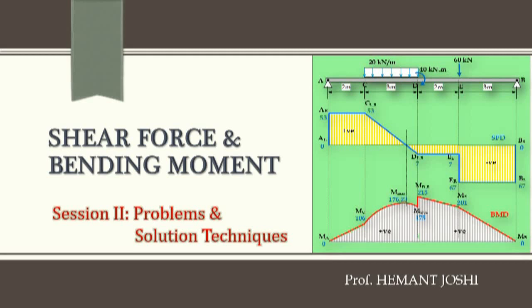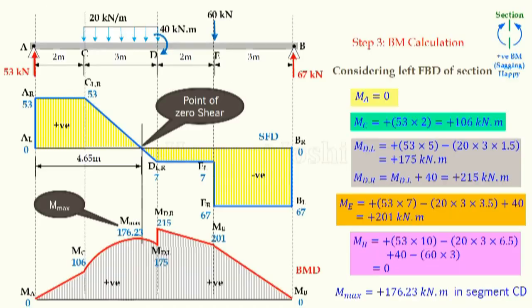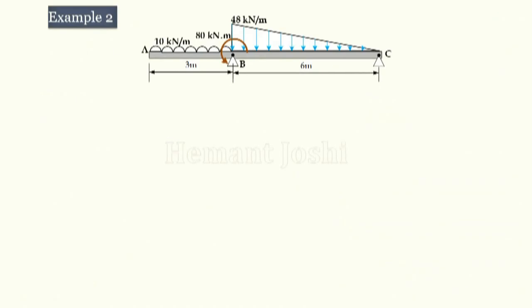Hello friends, welcome to session 2 on SFD and BMD, its problems and solution techniques. From practice point of view, let us move quickly through one more example. Consider beam ABC where AB is the overhanging portion, B and C are supported, and it carries a UDL of 10 kN per meter, a couple of 80 kN·meter, and a uniformly varying load acting on the beam.